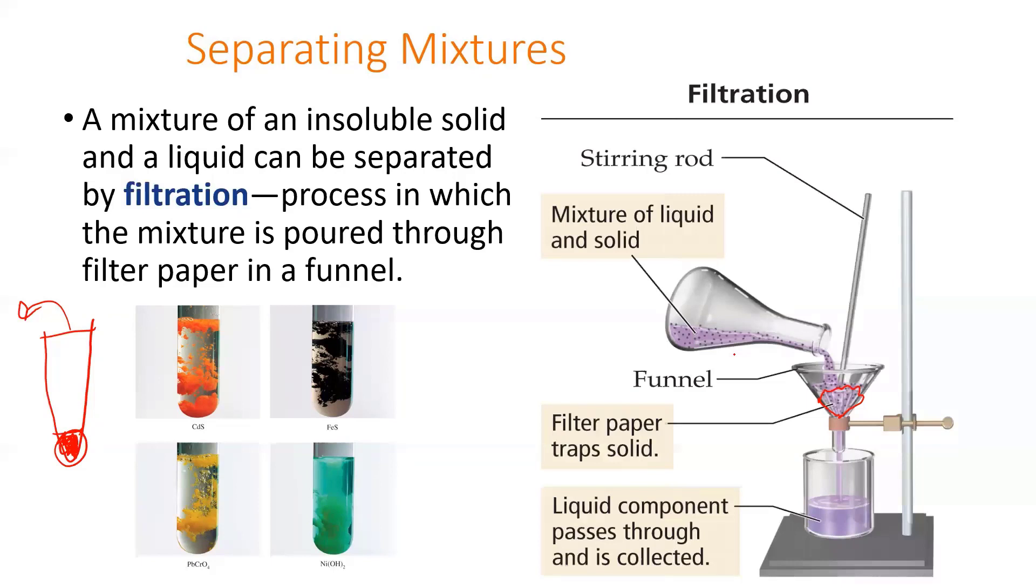Because again this is a heterogeneous mixture, there's distinct layer differences, they're not uniform. The liquid will go through the filter paper because it's a smaller component, and that liquid is typically referred to as the filtrate. The filtrate goes through the filter paper and then you have the suspension or the precipitate will stay in the filter paper and be trapped.